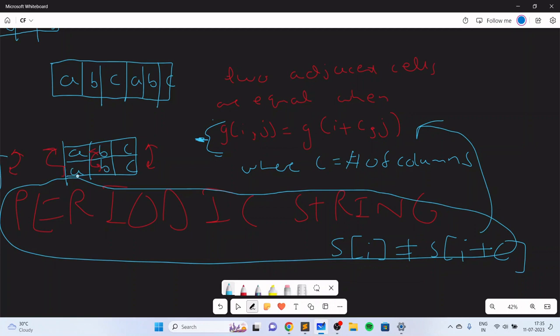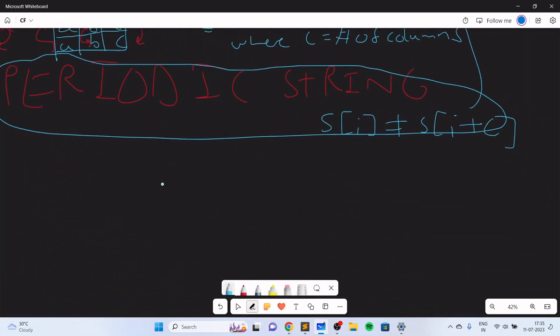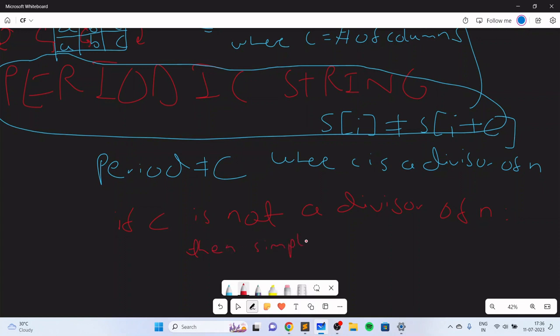This is exactly why the period cannot be equal to c where c is a divisor of n. I keep iterating this because if c is not a divisor of n, I don't have a formal proof for why the converse holds true, but it actually works out that if c is not a divisor of n, then simply output a string with period c.